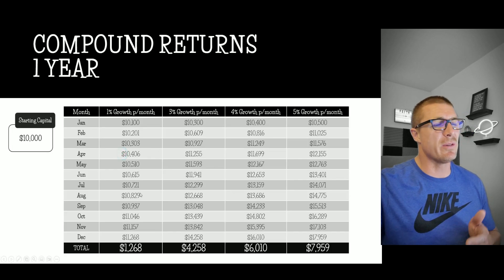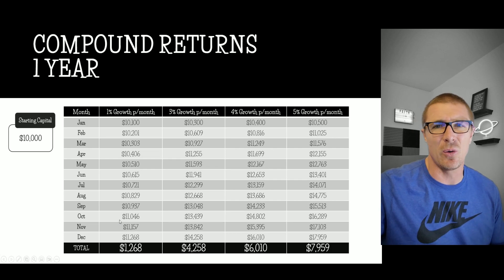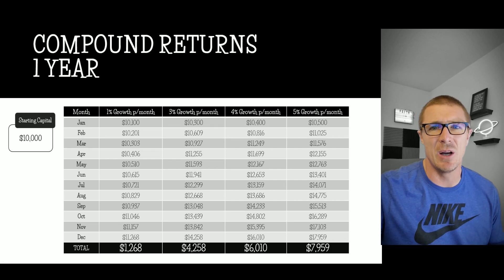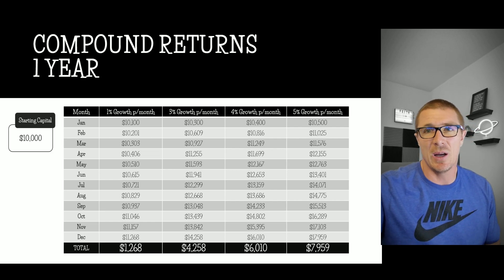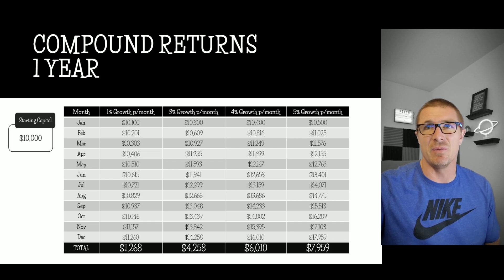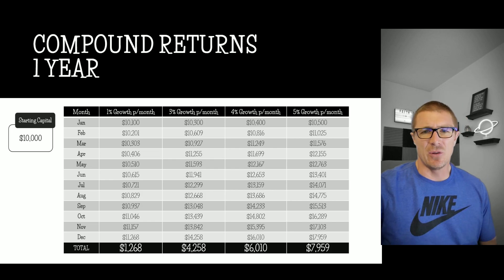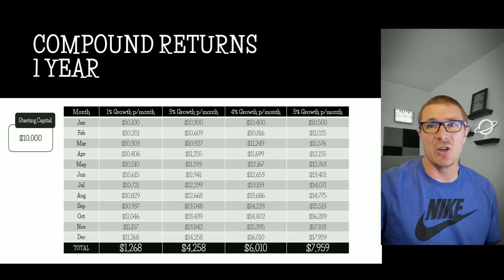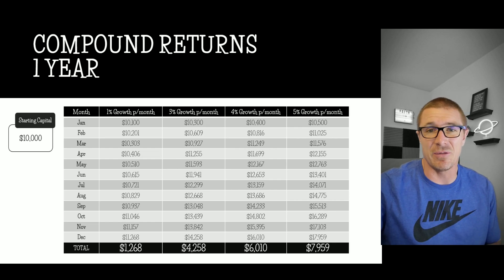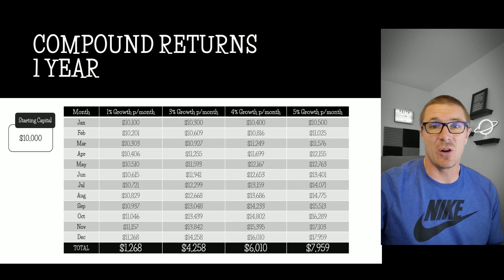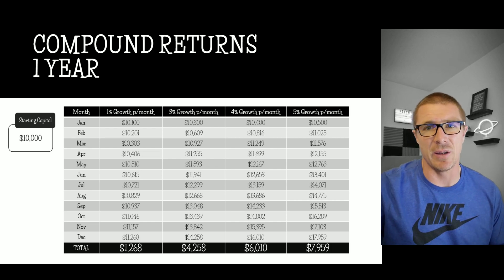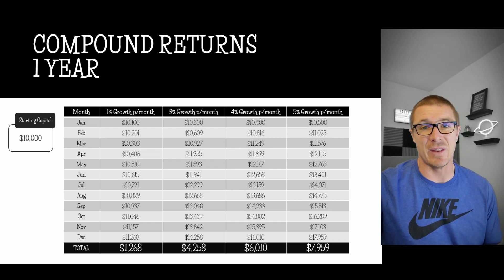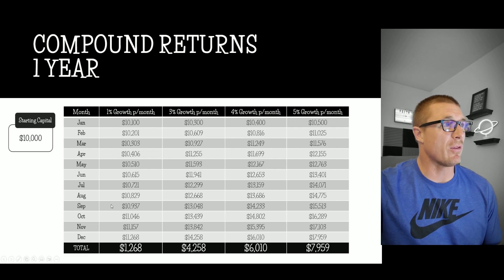Just to look at the totals on screen — this is more just for fun. If you make just one percent per month on the position, which is very doable — realistically two or three percent is pretty average — you can see over the course of a year you make four thousand on ten thousand, that's a forty percent return. At four percent growth you can make six thousand, and at five percent growth each month you can make seventy-nine percent returns — seven thousand nine hundred fifty-nine dollars. Really powerful on a small amount.